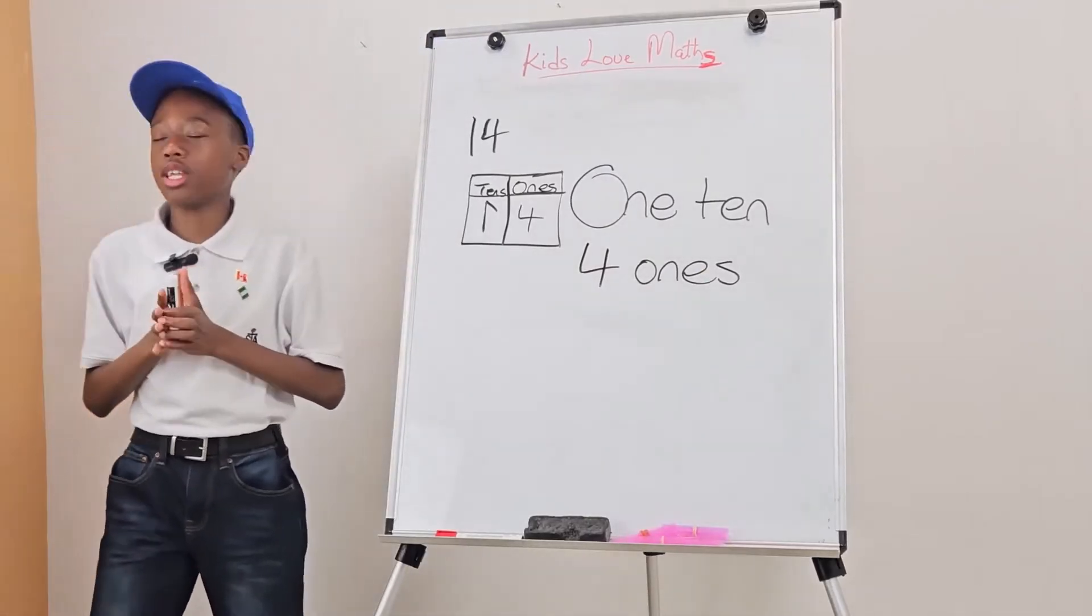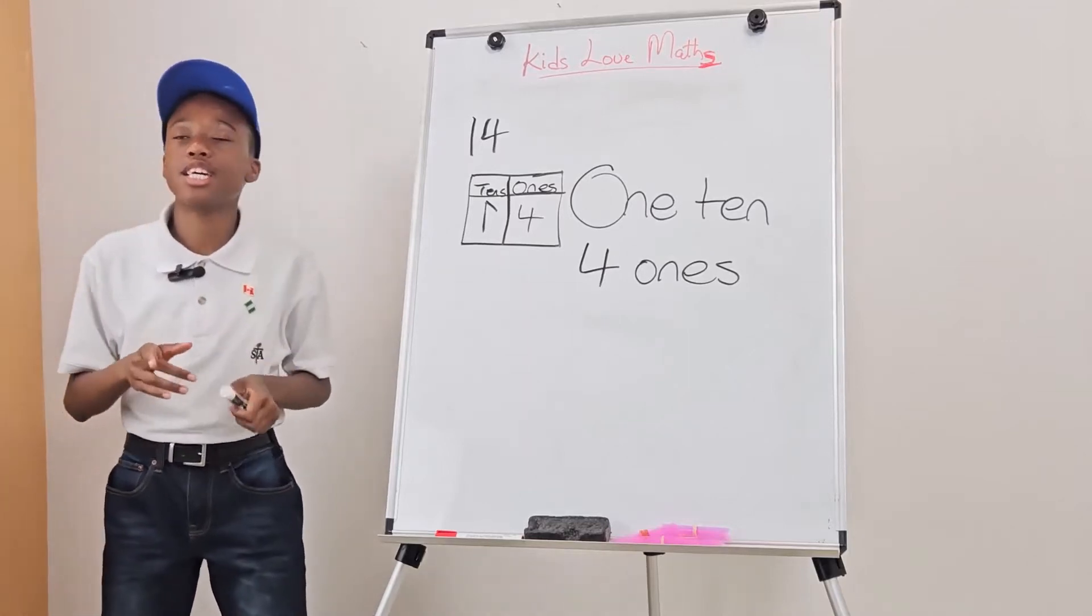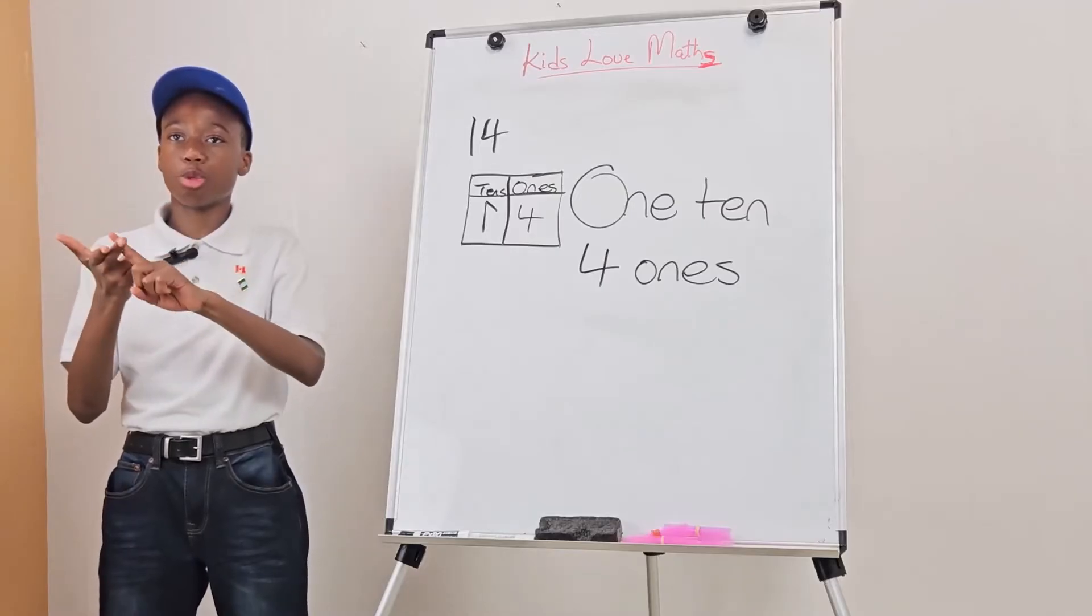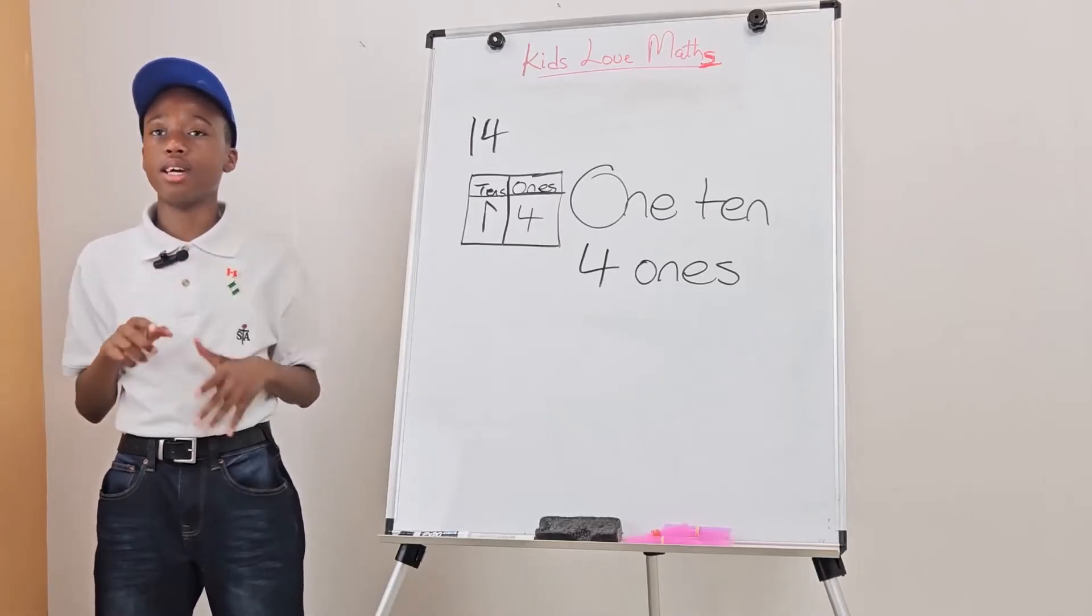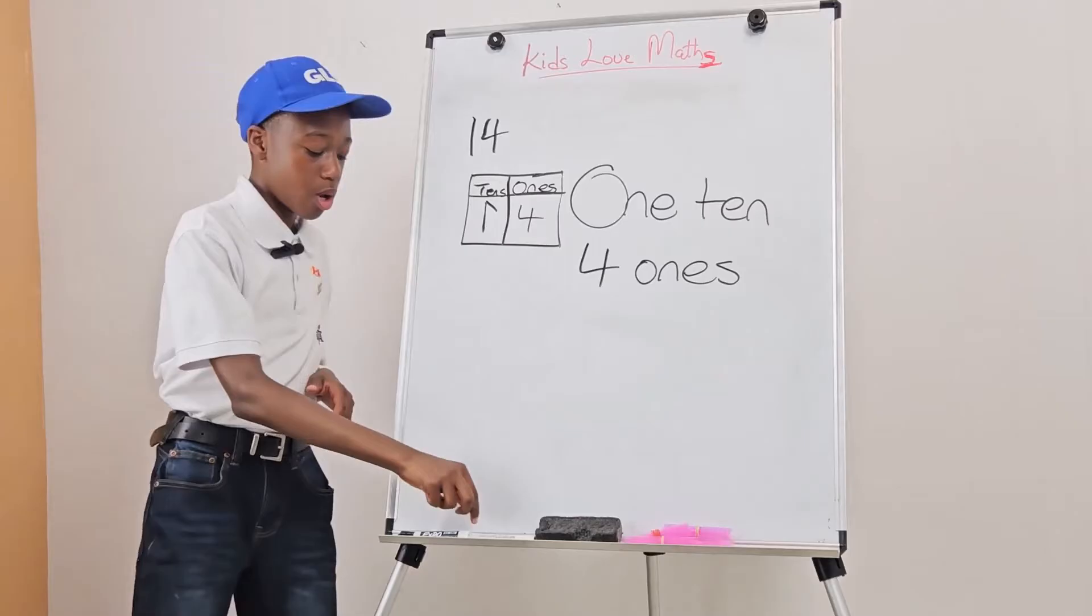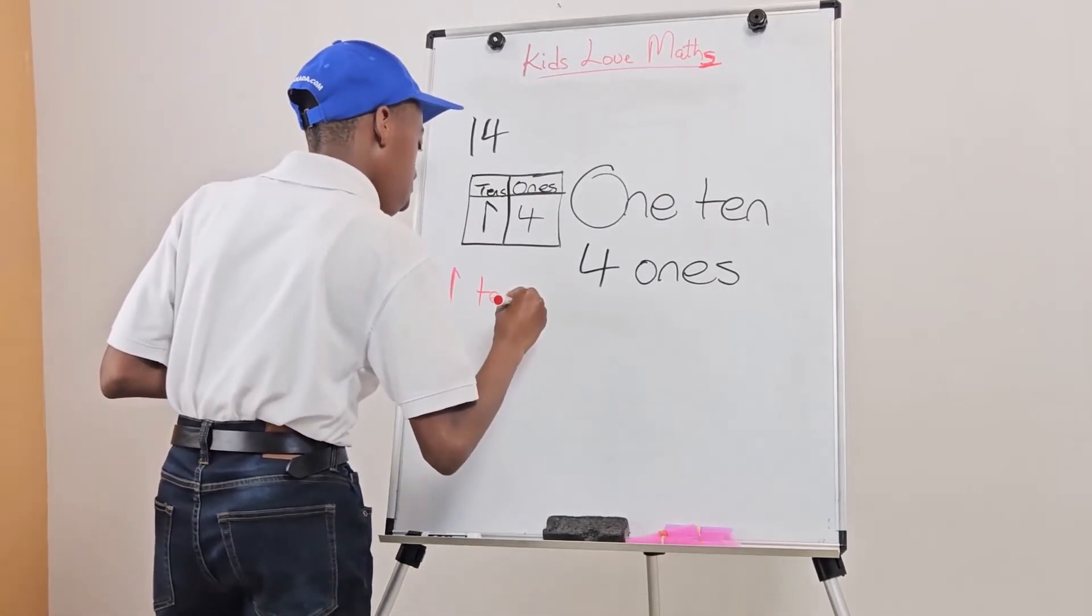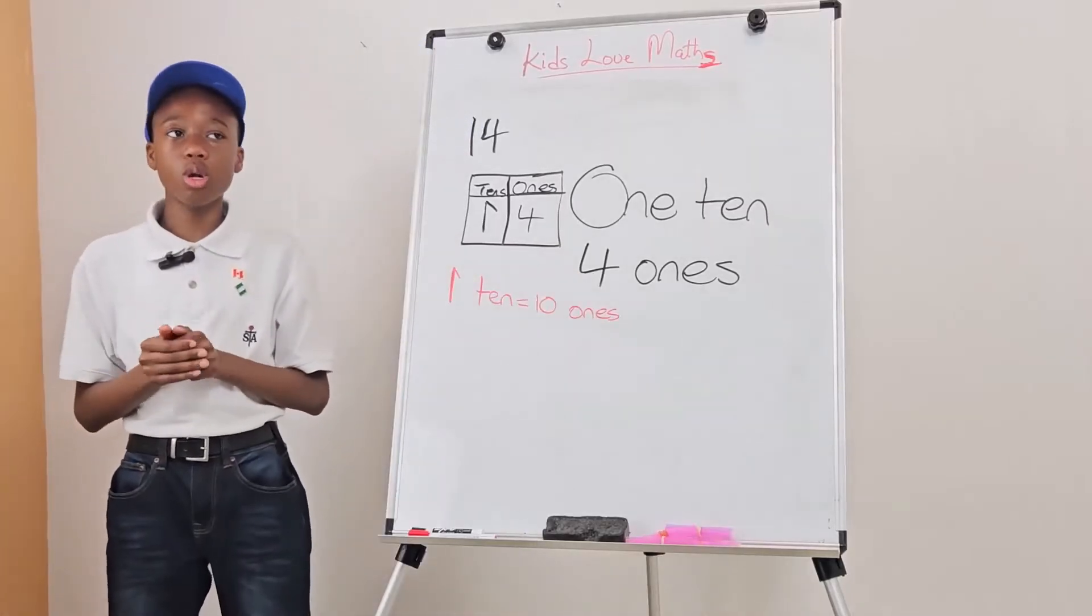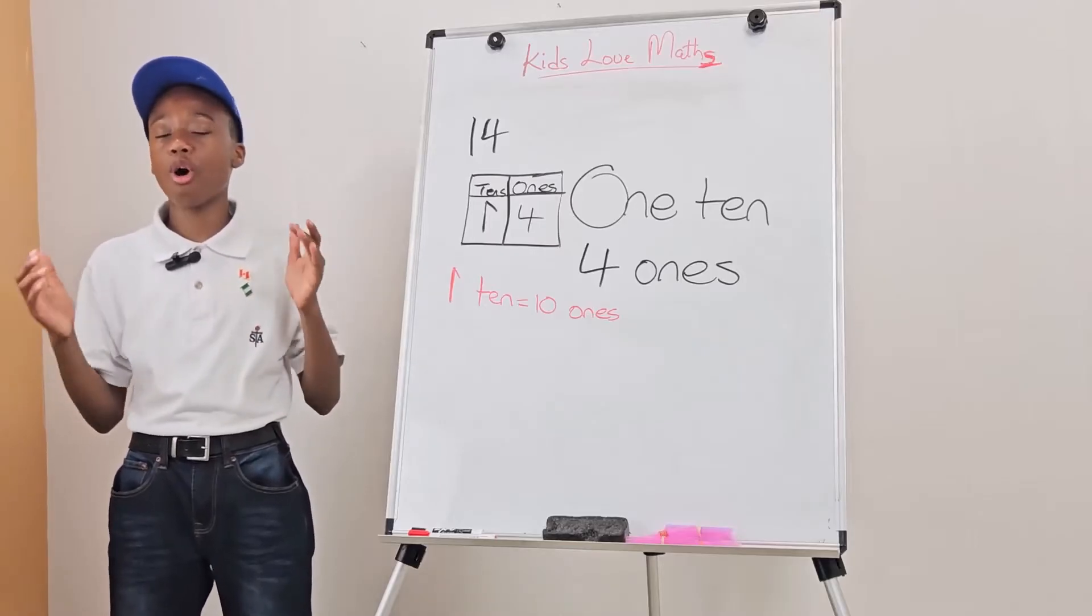So, the next question is, what does 1 ten mean? 1 ten is made of 10 ones. As you can see, 1, 2, 3, 4, 5, 6, 7, 8, 9, and 10. One ten, or a bundle, would equal 10 ones. In other words, the place value system recognizes a ten as a bundle of 10 ones.